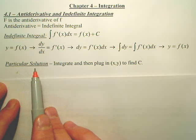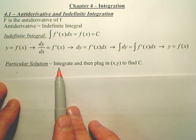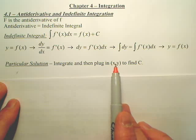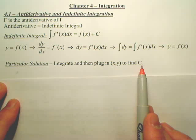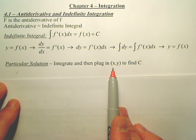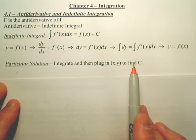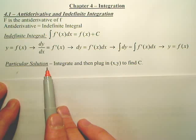There's something called a particular solution. That's when you integrate, then you plug in a coordinate to find C, to find out the exact value of your original equation. You need a point from your original equation to find the exact equation, and we'll talk about that more. But you always have to find your C to get a particular solution.